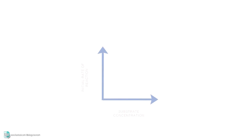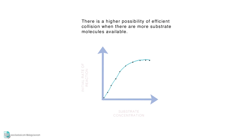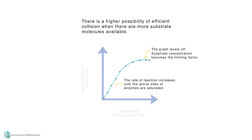As substrate concentration increases, the initial rate of reaction also increases. This is because there is a higher possibility of efficient collision when there are more substrate molecules available. However, the rate of reaction increases until the active sites of enzymes are saturated — when every enzyme active site is working continuously. The graph levels off, and from this point onwards, substrate concentration becomes the limiting factor. This is when Vmax is achieved.